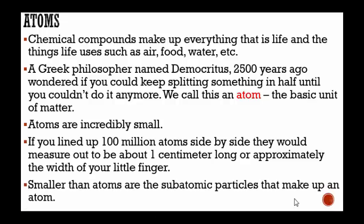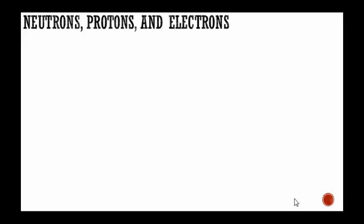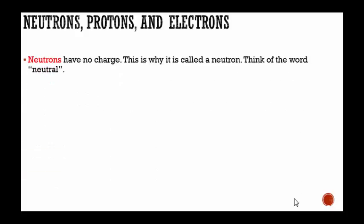Smaller than atoms are the subatomic particles that make up an atom. These subatomic particles are called neutrons, protons and electrons. Neutrons have no charge. This is why it's called a neutron. Think of the word neutral.